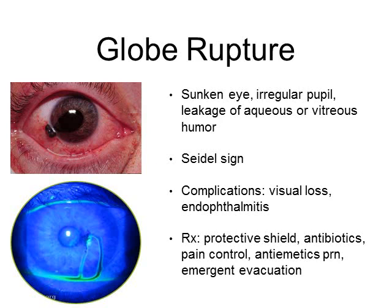You should protect the eye from any further damage — devise some kind of protective shield. Administer antibiotics if you have those. Pain control is important. Antiemetics as needed, as vomiting will increase intraocular pressure and should be avoided. These patients will need emergent evacuation. People who have penetrating injury to the eye should be treated the same as globe rupture — do not remove penetrating objects; stabilize and protect the eye.